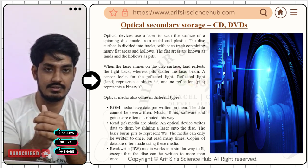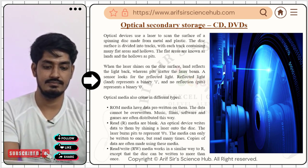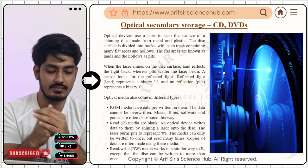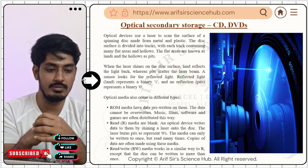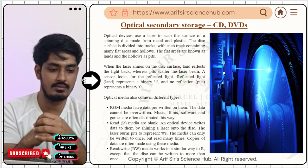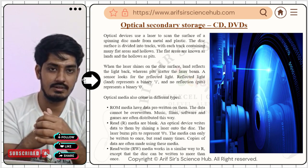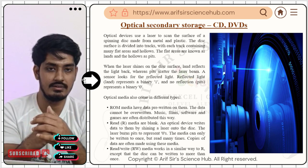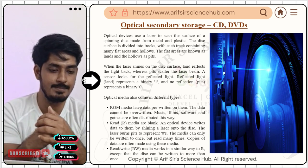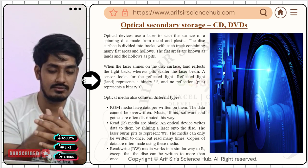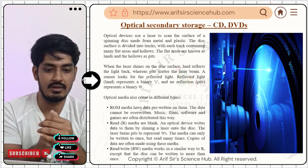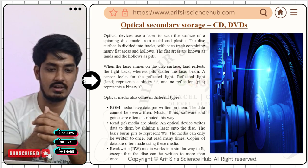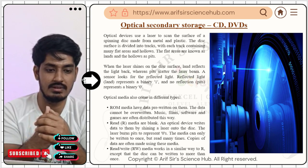Now, optical secondary storage — the CD or DVD. Data is stored using light beams: a laser shines on the disk, reflects back to sensors, and by this property data is stored. Optical devices use a laser to scan the surface of a spinning disk made from metal and plastic.